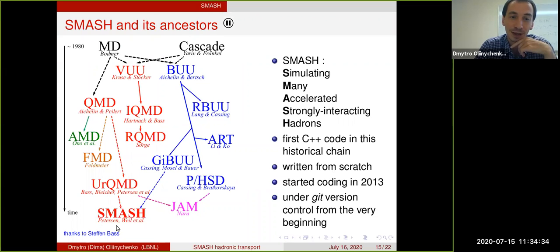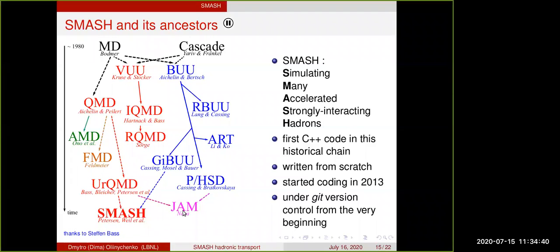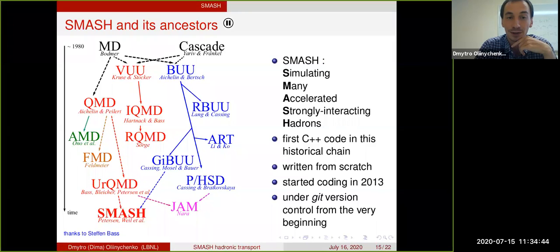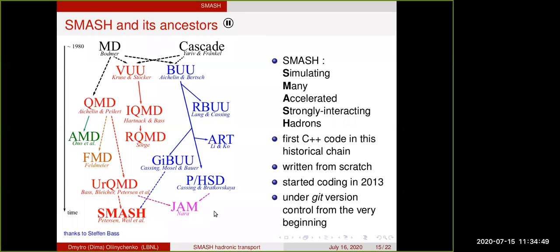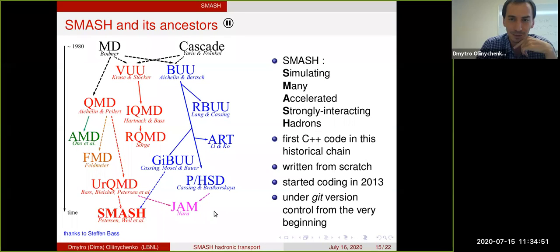SMASH is the only C++ code, which I guess was the reason why SMASH entered Jetscape. Other codes are not worse than SMASH in any respect. They have a lot of nice physics features, sometimes ones that SMASH doesn't have, but they are not C++ codes. What's nice about SMASH is it's under git version control from the very beginning, so for any kind of bug that you find, you can always go back and find out how it was introduced, what was happening with it, and what papers were published with this bug.